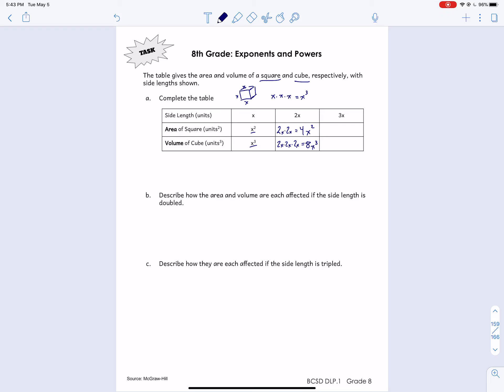Alright, and then again, the same thing with 3x is the new side length. The area will be 9x squared. The volume is 3 times 3, which is 9, times 3 is 27x to the third power. Again, we don't know what x is, but if we did, we could figure out the actual units.